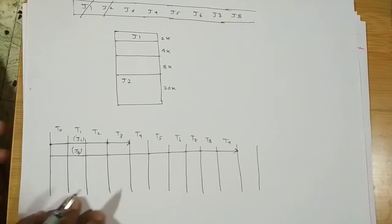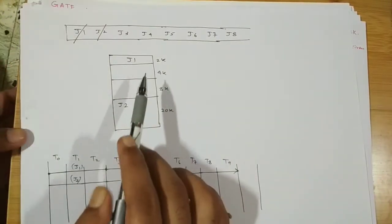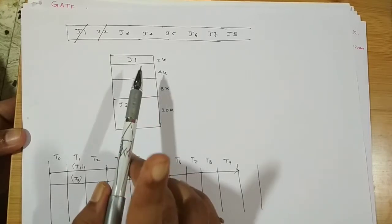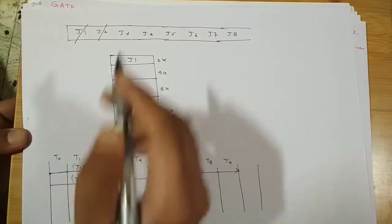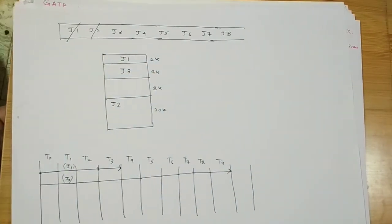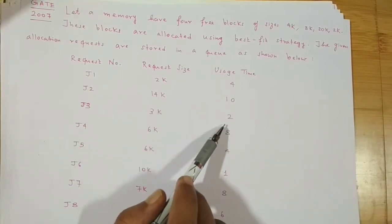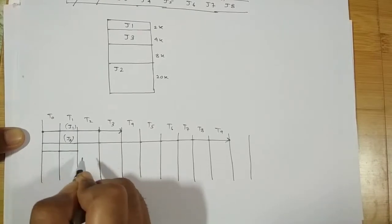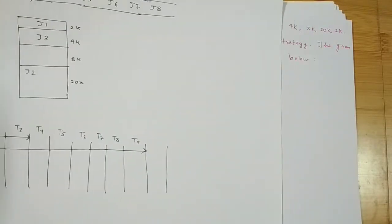Next, J3 has a requirement of 3K. We have free blocks of 4K and 8K. Allocating J3 to 4K wastes 1K; allocating to 8K wastes 5K. Best fit means we minimize wastage, so J3 gets the 4K block and runs for 2 units of time.